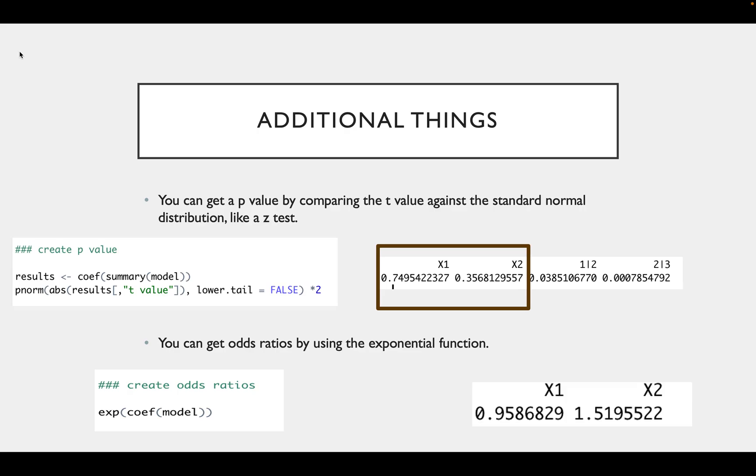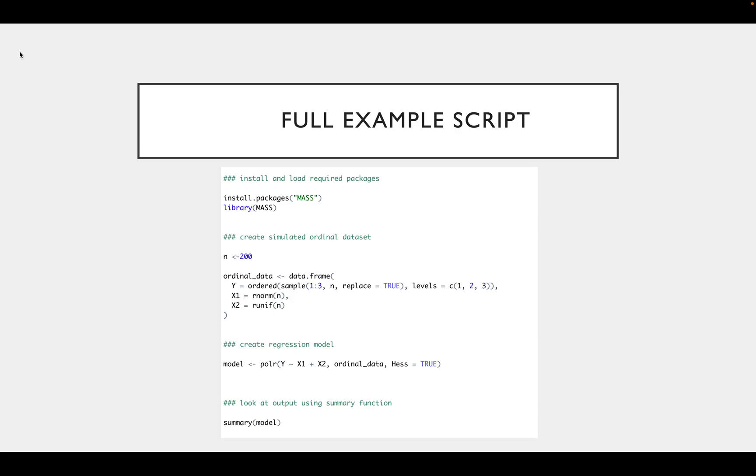Although for our variable one, our odds ratios are getting very close to one, meaning that there is no difference. So here is a full example of how to run the main analysis of an ordinal regression. Thank you very much.